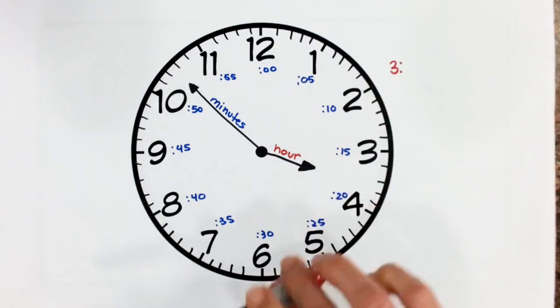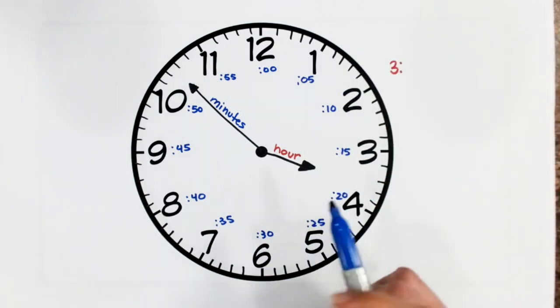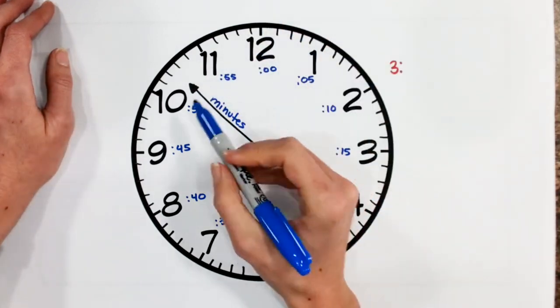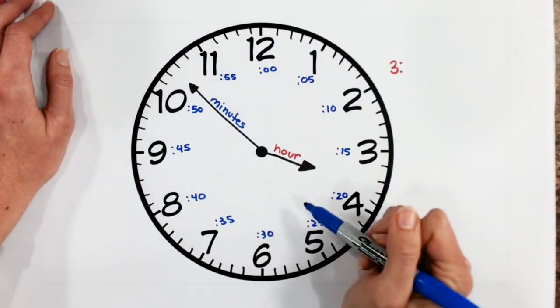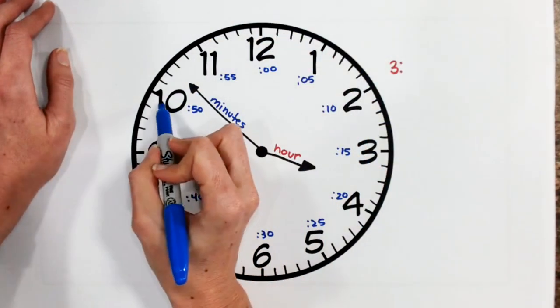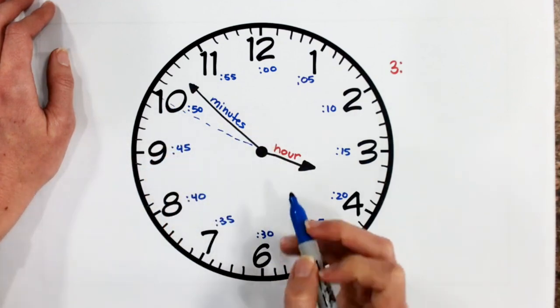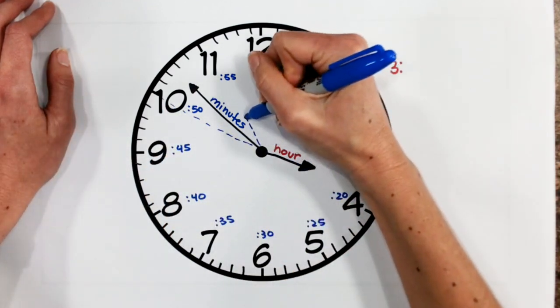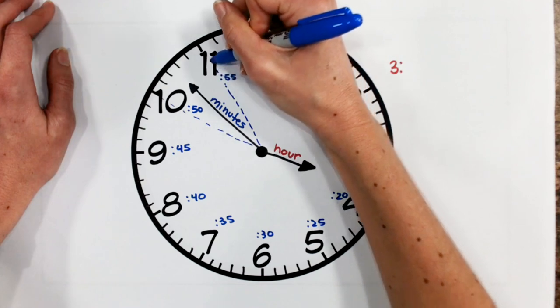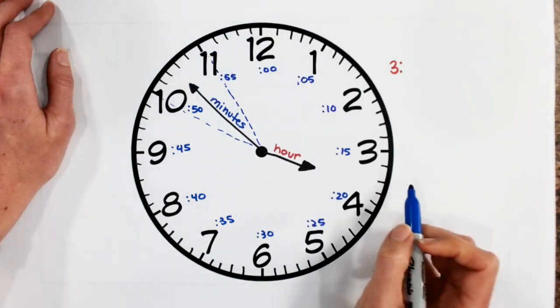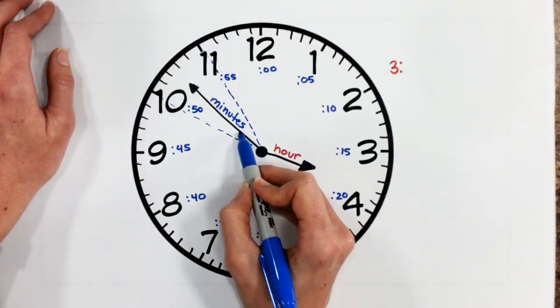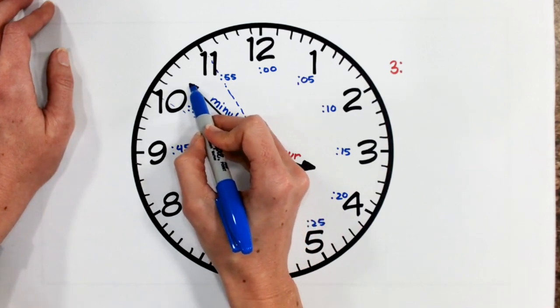Now let's look at our minutes. Again, this long hand is not pointing directly to one of my five-minute increments. I do see that it's between my 10, which represents 50 minutes, and the 11, which represents 55 minutes. So let's take a look at where my long hand goes to the nearest hour.